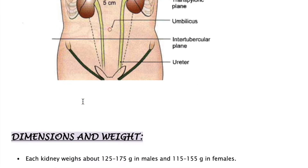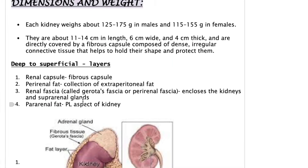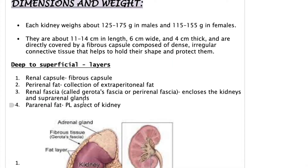Each kidney weighs anywhere between 115 to 175 grams — slightly lighter in females than males. They are about 11 to 14 centimeters in length, 6 centimeters wide, and 4 centimeters thick. They are well cushioned by a capsule, which protects them, shapes them, and holds them in position in the retroperitoneal cavity.